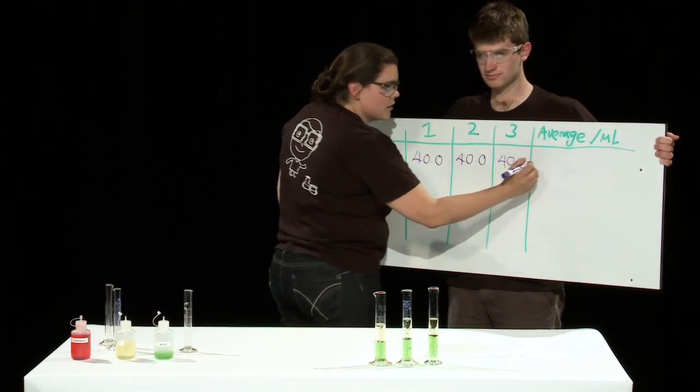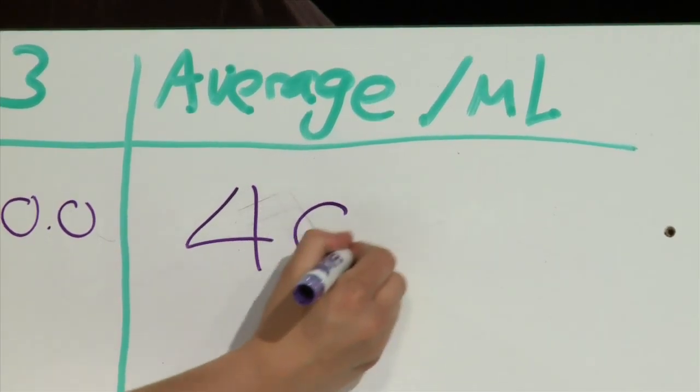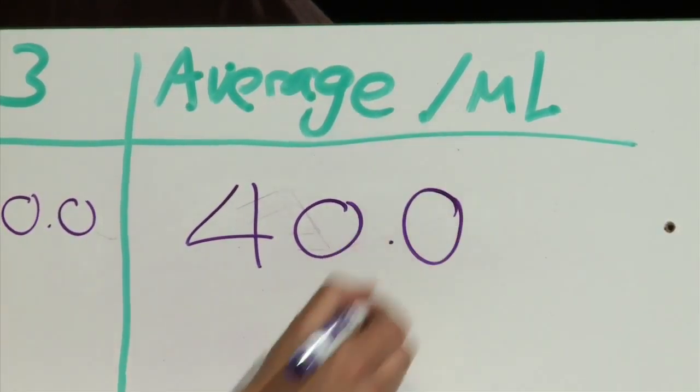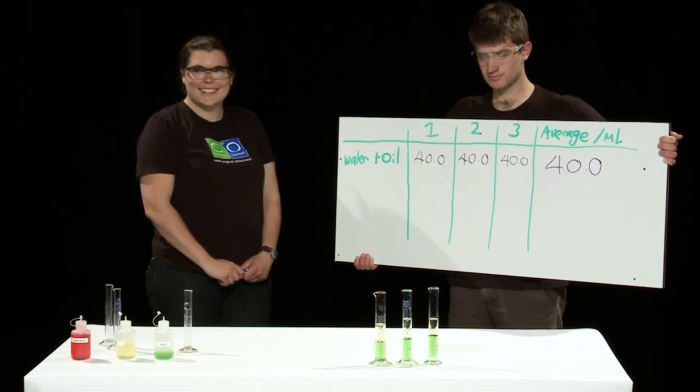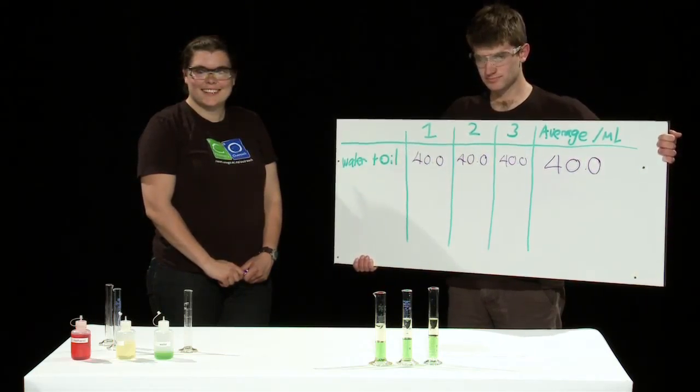Now with three results you can calculate an average. Adding them all together and then dividing by three. So as you can see there can be no doubt that the actual answer to 20 plus 20 is 40.